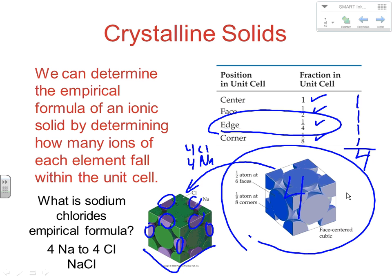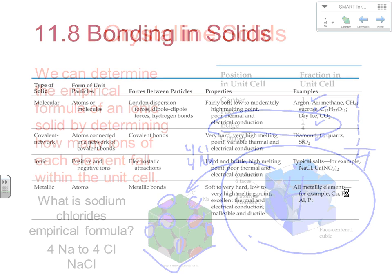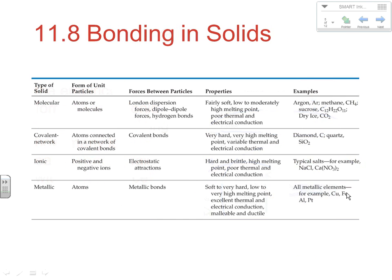From our unit cell, by looking at what's inside and understanding whether it's face-centered or body-centered, we can compare the number of ions of each element and determine the empirical formula. That's one application of unit cell analysis.